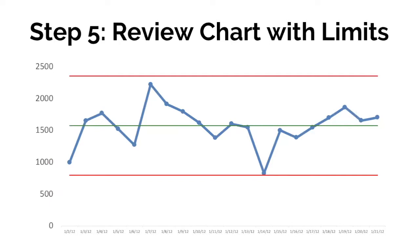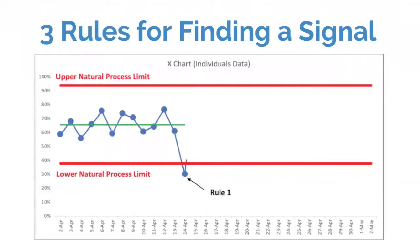Here are three rules for finding a signal in a metric. We have a data point lower than the lower natural process limit. We could call this a rule one signal. When we see a signal, it's appropriate to ask what changed, what happened, so that we can react. And if higher is better on this chart, we want to understand what caused performance to drop so we can eliminate that root cause and get performance back to where it had been, if not making things a little bit better. A single data point above or below the limits.